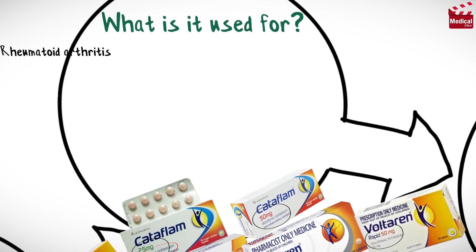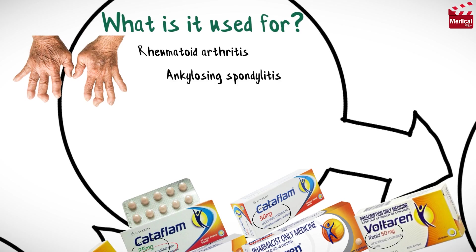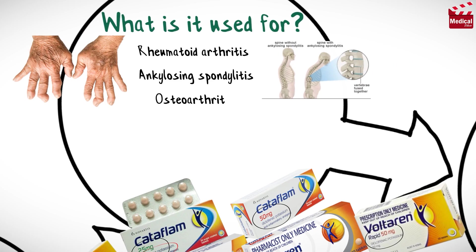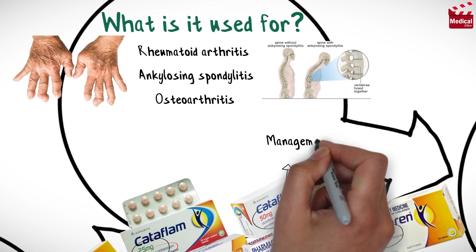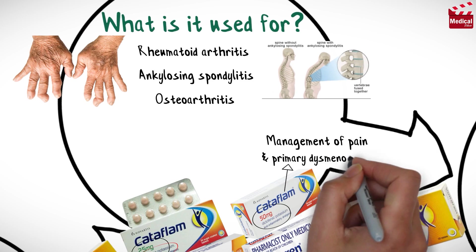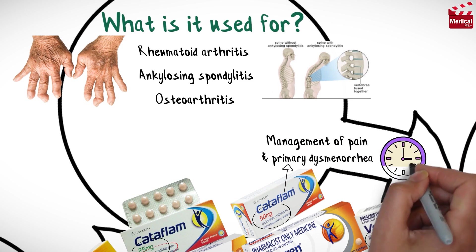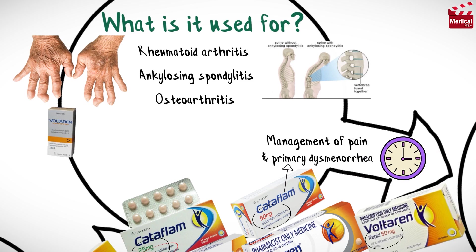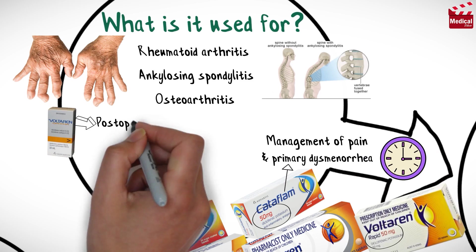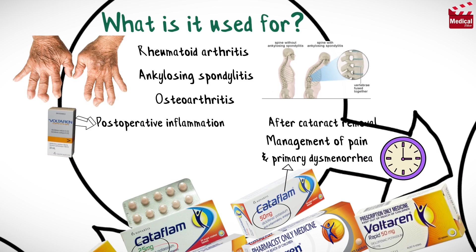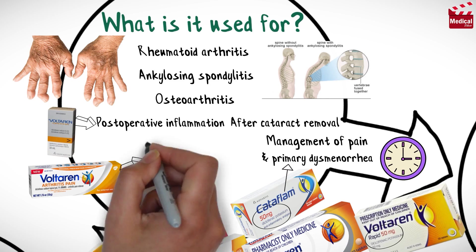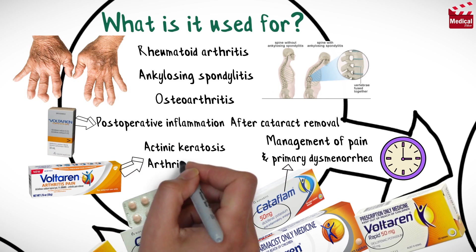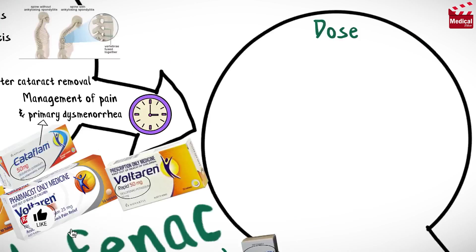It is used in the treatment of rheumatoid arthritis, ankylosing spondylitis, and osteoarthritis. The potassium salt is approved for management of pain and primary dysmenorrhea when prompt pain relief is needed. Ophthalmic solution is used for postoperative inflammation after cataract removal, and the topical gel is used for actinic keratosis and arthritis pain.